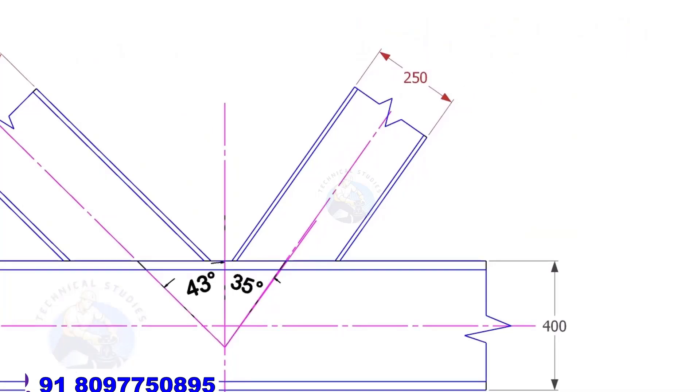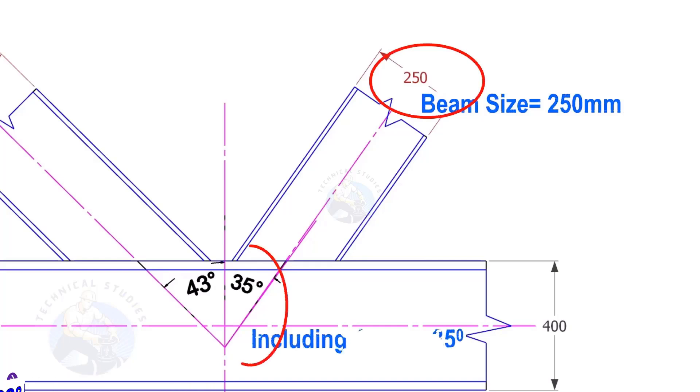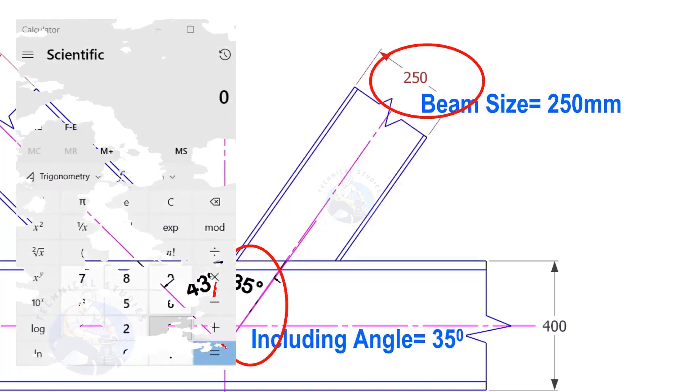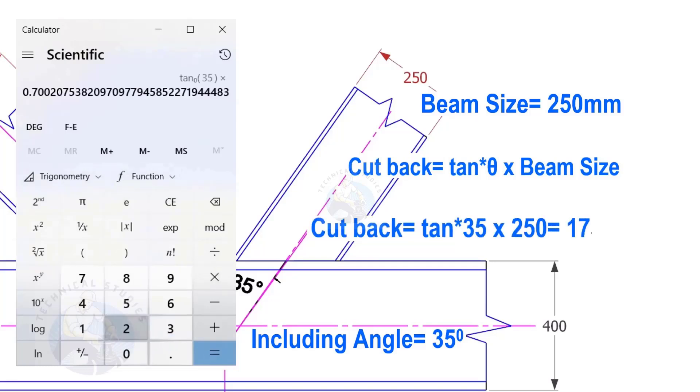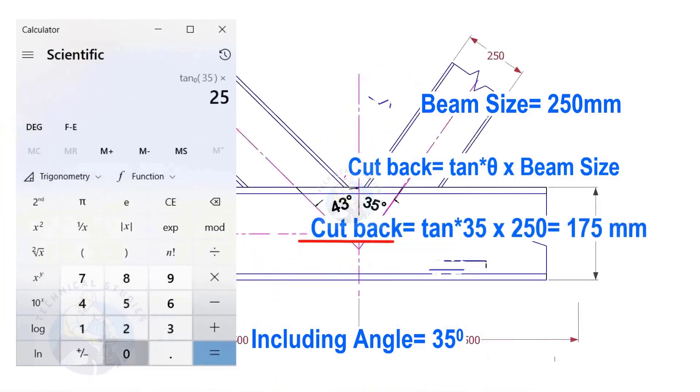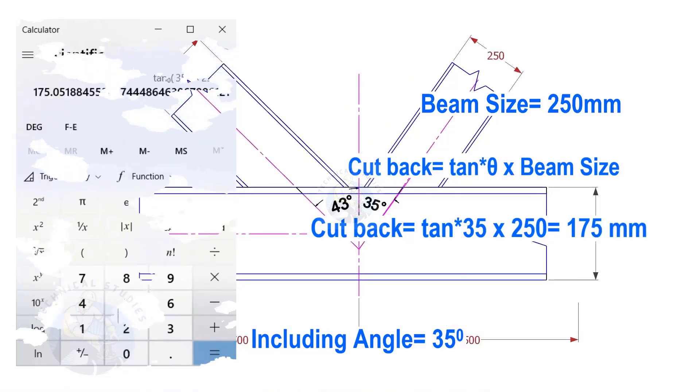Here, the size of the beam is 250 and the including angle is 35. Let us calculate the cutback. The cutback for this beam is 175 millimeters.